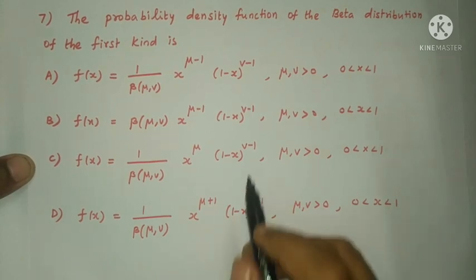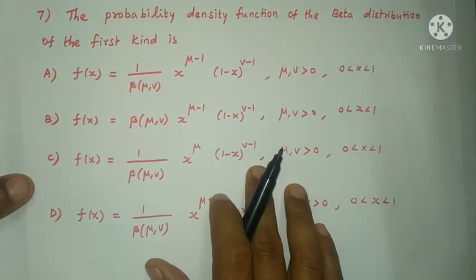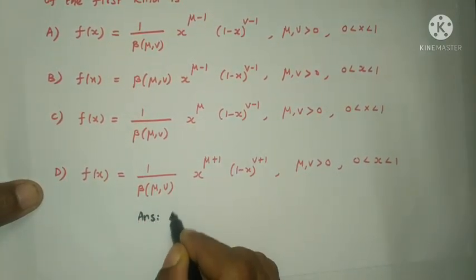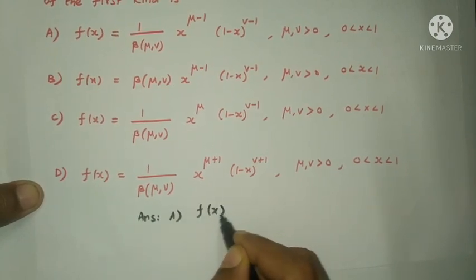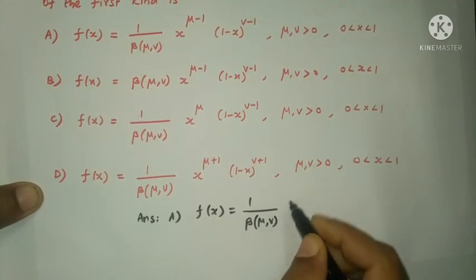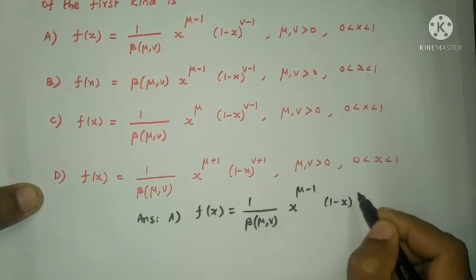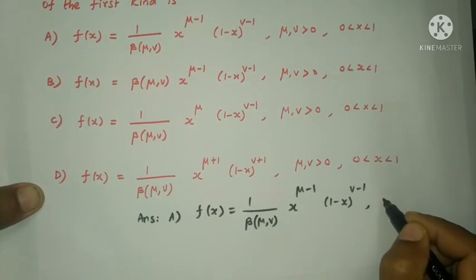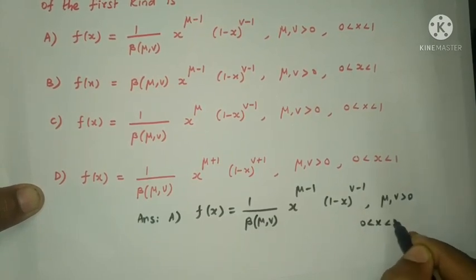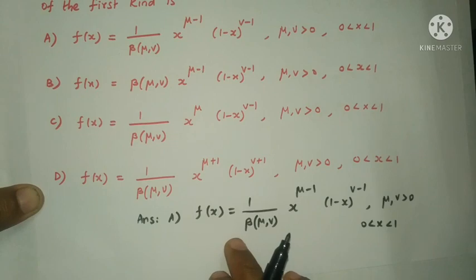Next question: The probability density function of the beta distribution of the first kind is. The answer is option A. f of x is equal to 1 by beta of mu comma v into x power mu minus 1 into 1 minus x the whole power v minus 1, where mu, v is greater than 0, 0 less than x less than 1.